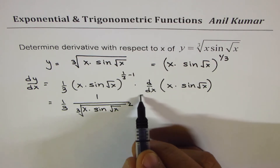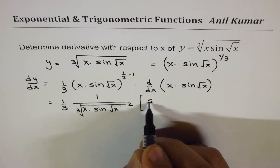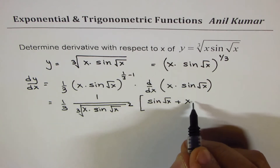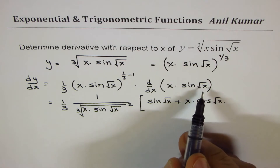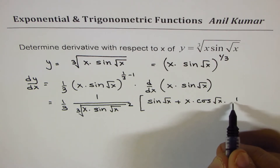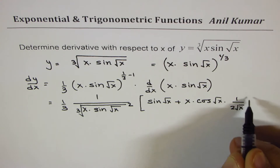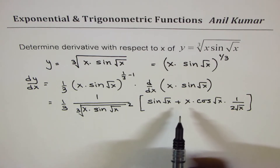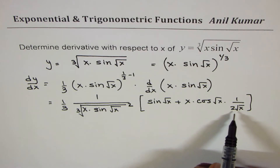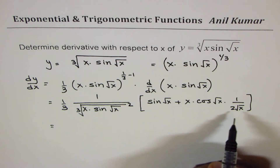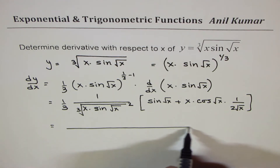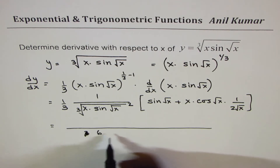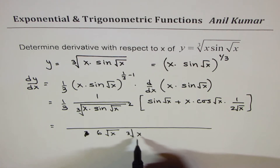Now we apply the product rule to differentiate the inside function. The derivative of x is 1, so we get sine(√x) plus x times the derivative of sine(√x), which is cos(√x) times the derivative of the inside function (1 over 2√x). To combine terms, we take 2√x as the common denominator, giving us 6√x in the denominator along with the cube root factor.